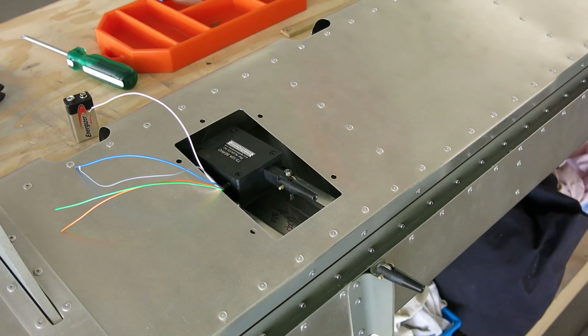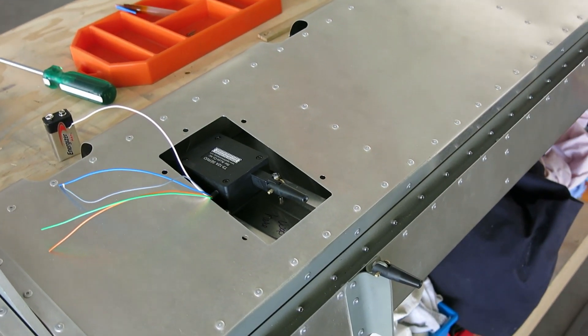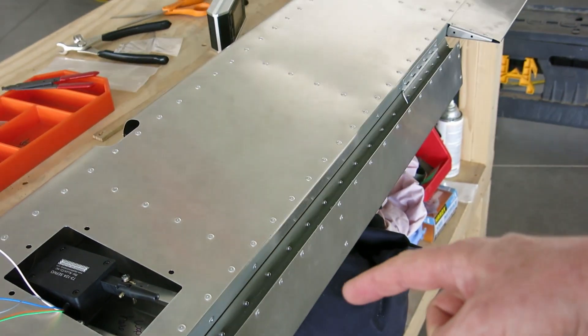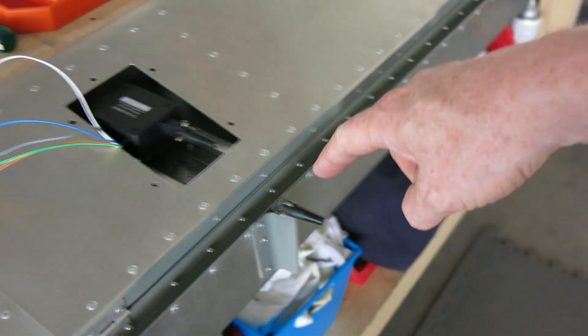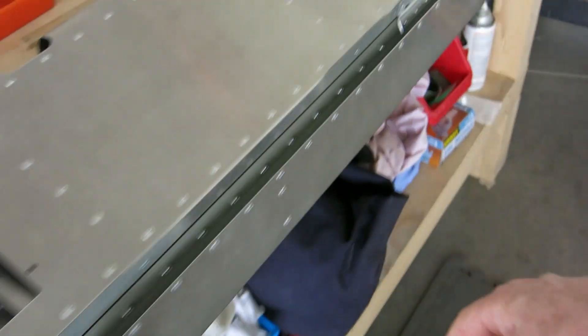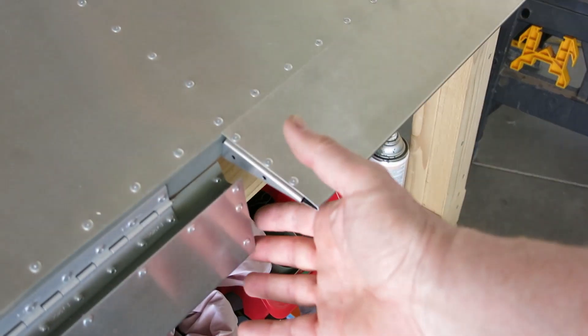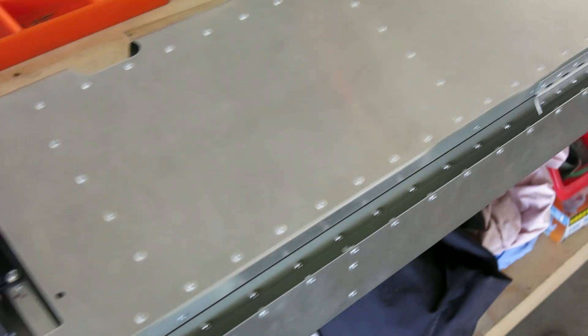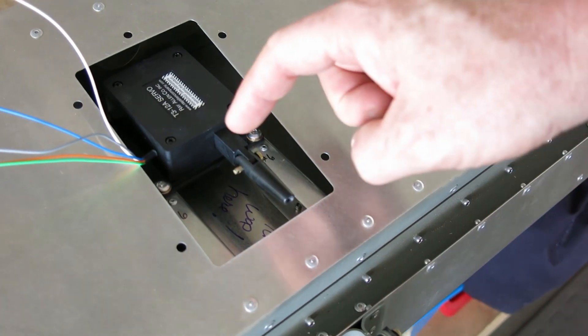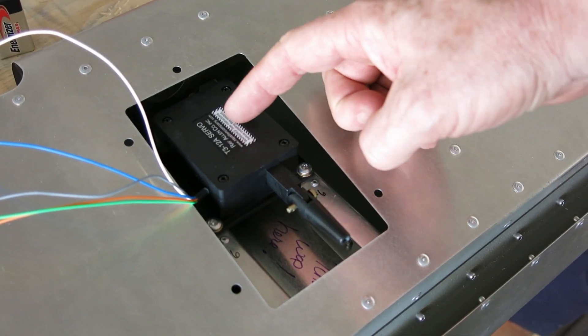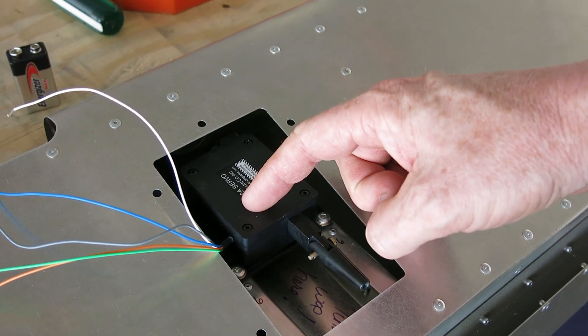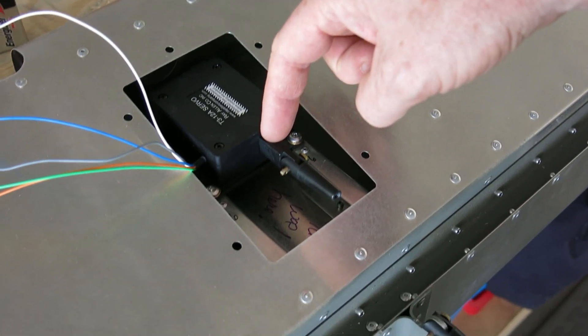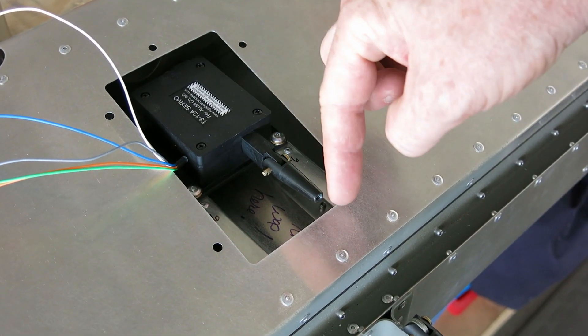We're working away on this trim servo here. This has to be in the middle when the trim tab is neutral. So what we did was find the halfway point of the travel of this trim servo. There's a little motor in here that's hooked up to a jack screw and it turns this actuator in and out.